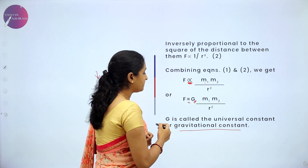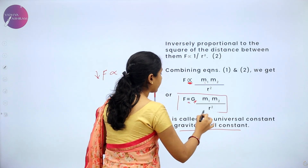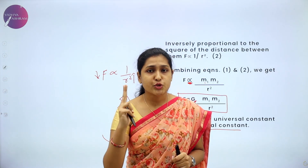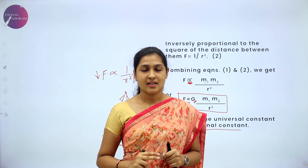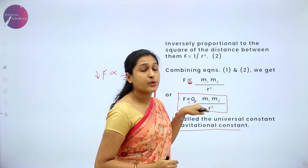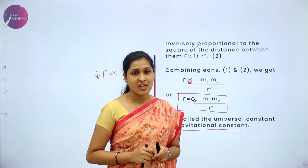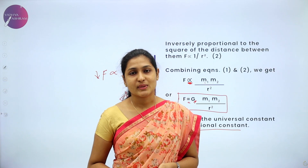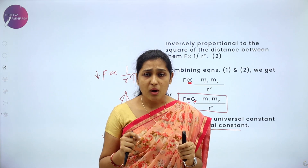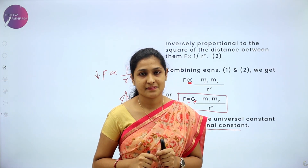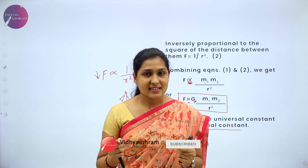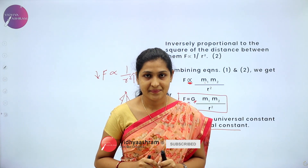This is called the gravitational constant, which is included along with the equality sign. Now you have the formula for the force of attraction between two bodies, two objects. By this you can say that it is a universal constant. I would like to conclude that gravitation is universal — it attracts each and every object in this universe: even me, you, and every planet in this universe. Thank you.